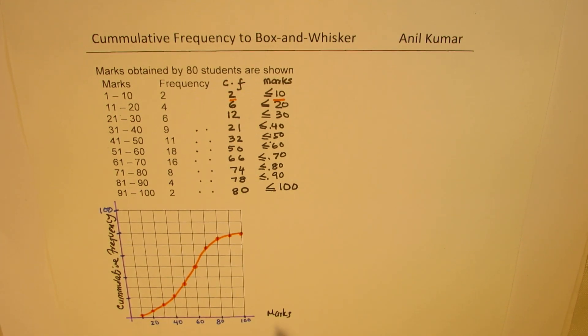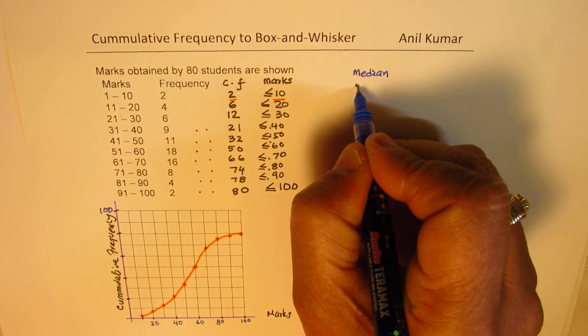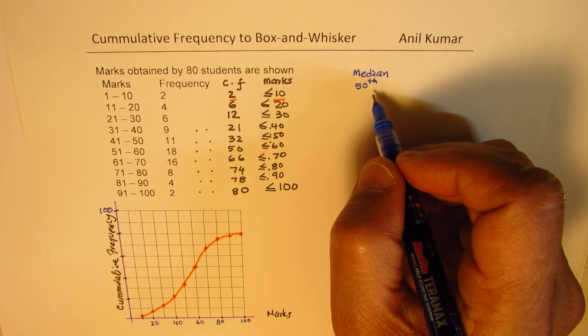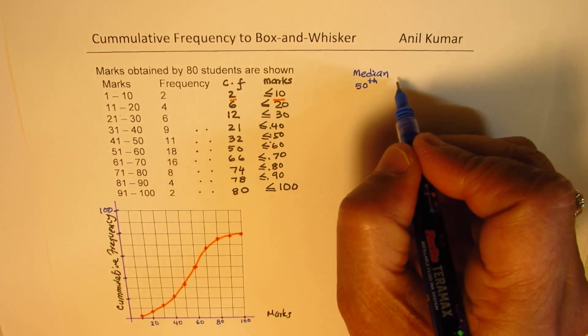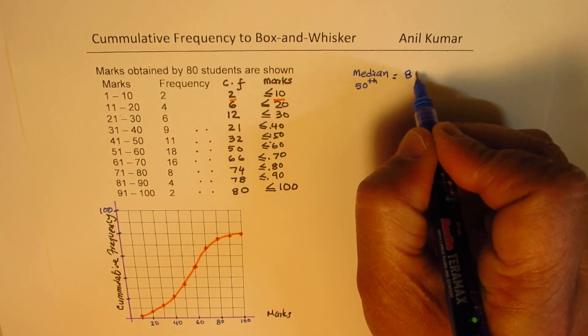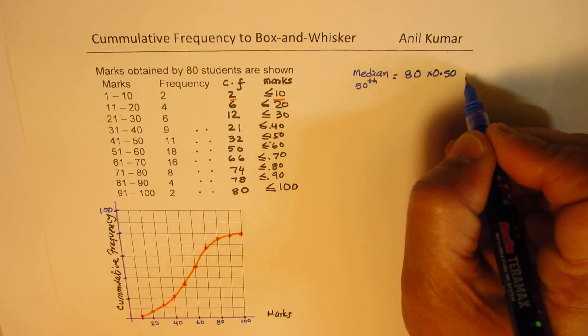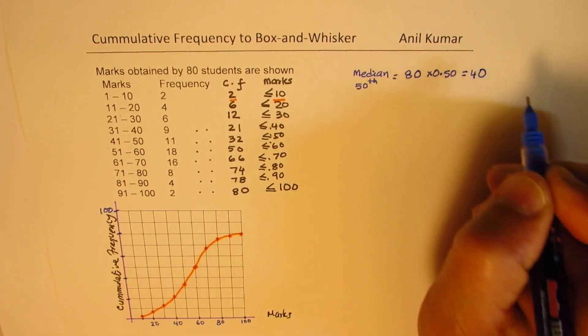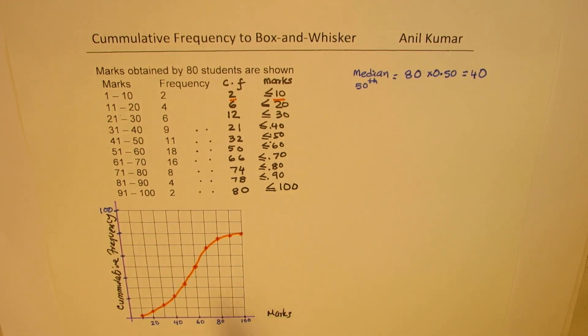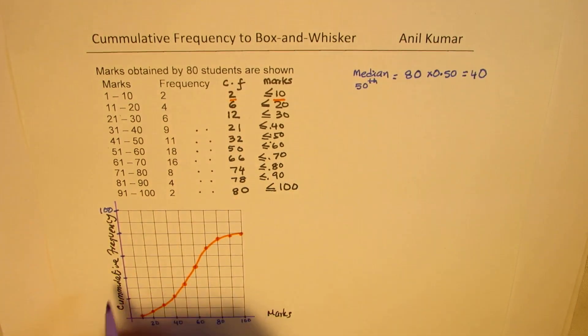Now, from this graph, we can calculate the median. Median is 50% mark. So, median. Let me do the calculations here. Median is 50th percentile. It is a 50% mark. So, 50% of 80 is what? To calculate this, we have to check the value at 50% of 80. So, 80 times 0.50, which is equal to 40. So, for a mark of 40, we will check. For a cumulative frequency of 40, we will check the marks.